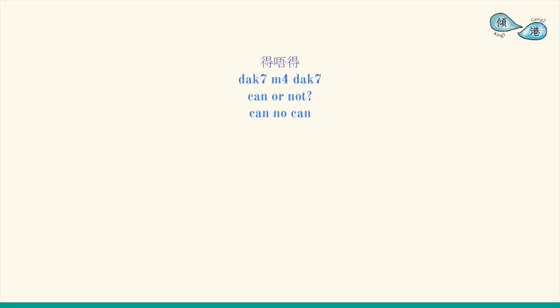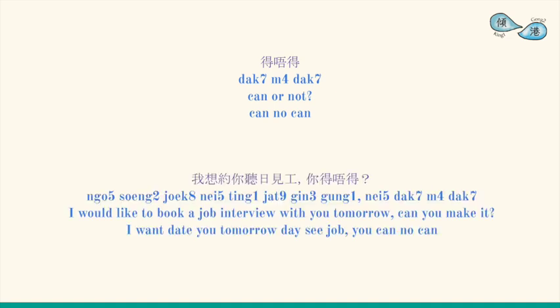The positive and negative structure can be applied to all verbs. For example, 得唔得? In a sentence: 我想約你明天見面，你得唔得? (I want to meet you tomorrow, is that okay?)